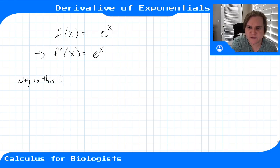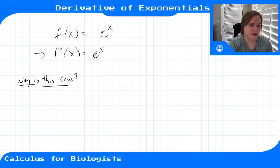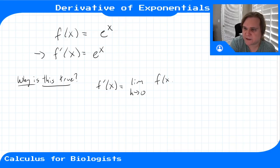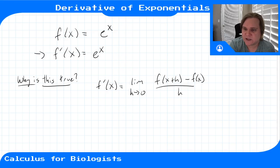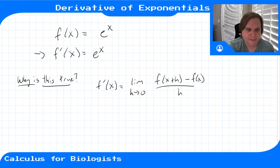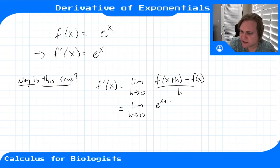Let's start from the limit definition of the derivative. f'(x) is equal to the limit as h goes to zero of f(x+h) minus f(x) divided by h. This h is taking the place of delta x — it's the step away from x, and this expression is the average rate of change between x and x+h. Plugging in our function, this gives us the limit as h goes to zero of (e^(x+h) minus e^x) divided by h.